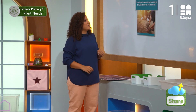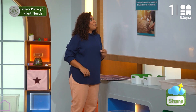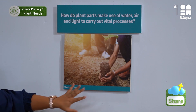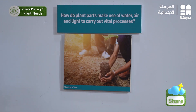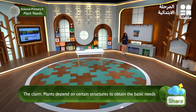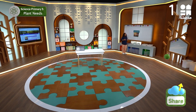This is our main question: how do plant parts make use of water, air, and light to carry out vital processes? This is our investigative phenomena picture. The claim is that plants depend on certain structures to obtain their basic needs. What evidence may be useful to support our claim?